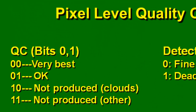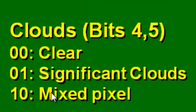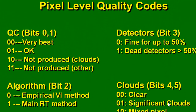Every MODIS product has a pixel-level quality code flagged as bits. For example, bits 0 and 1: if both bits are off, it represents the very best quality. Bit 2 indicates how leaf area index was estimated — whether based on an empirical relationship with NDVI or the main radiative transfer method. Bits 4 and 5 indicate whether the pixel was clear, mixed, clear with clouds, or significantly cloudy. We can use these quality codes to screen out low-quality pixels.